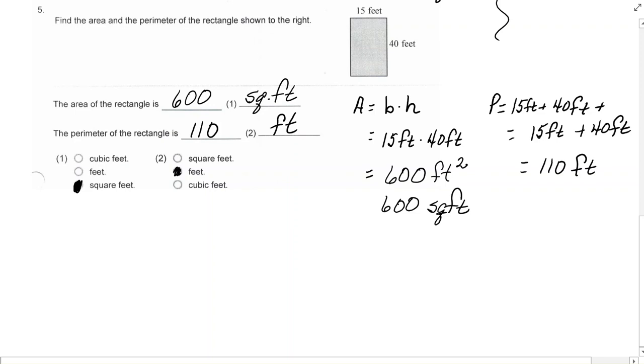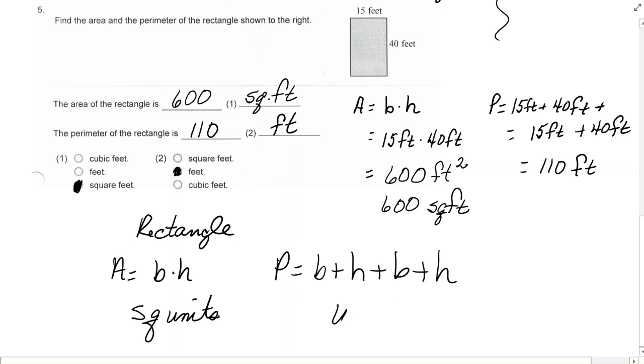So, let's summarize. When we're talking about a rectangle, the area is the base times the height, and you always get square units. The perimeter is the base plus the height plus the base plus the height, and you always just get plain units, like feet or inches or meters.